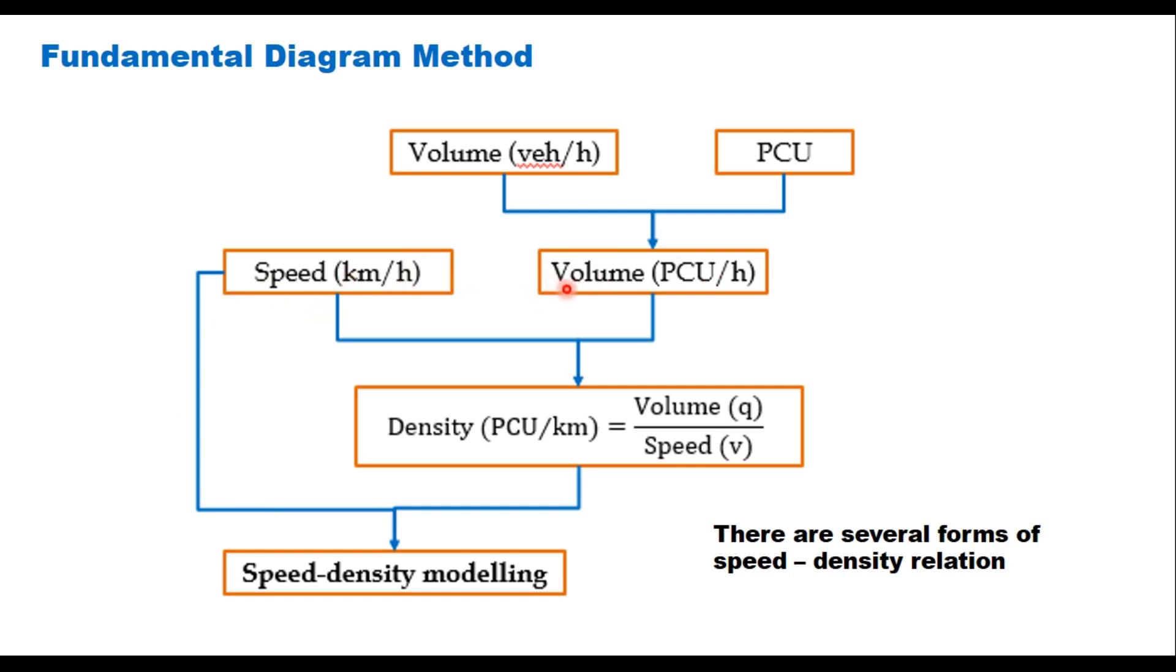Because we do not have the complete range of traffic volume data starting with a very low volume to a very high volume, generally what is done is using these two parameters we determine the density using the correlation Q equals K into V.